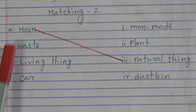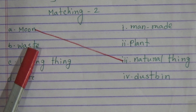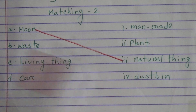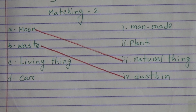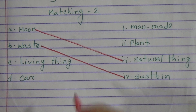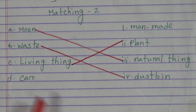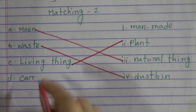Number B, waste, will be matched with dustbin — that means number B will be matched with number 4. Number C, living thing — we know plant is a living thing — that means number C will be matched with number 2. Number D, car — we know car is a man-made thing — that means number D will be matched with number 1.